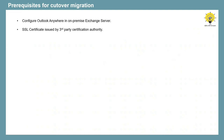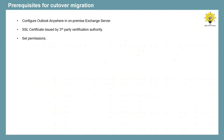You would require an SSL certificate from a third-party certification authority, and mail.domain.com and autodiscover.domain.com have to be added under the subject alternative name of that certificate. When we create a migration endpoint in Office 365, we specify on-premise Exchange Administrator credentials. This admin account should have full access permission or receive-as permission on the on-premise mailboxes that we are going to migrate to Office 365.